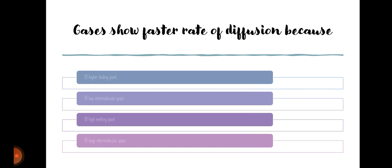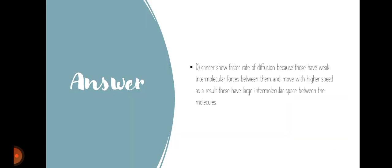Gas shows a faster rate of diffusion because of: (A) higher boiling point, (B) low intermolecular space, (C) high melting point, (D) large intermolecular space. The answer is C.